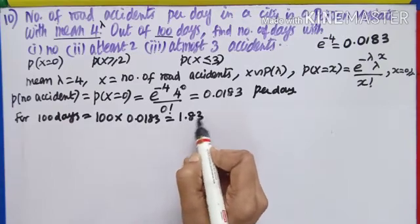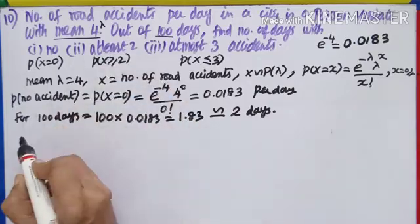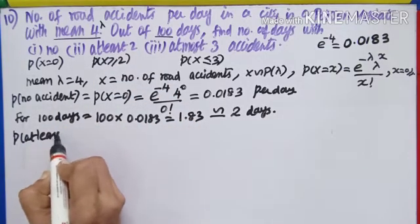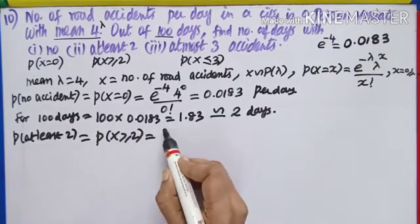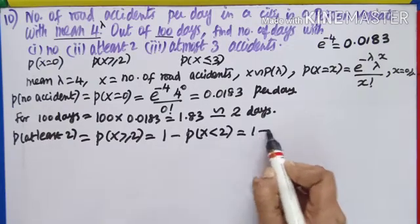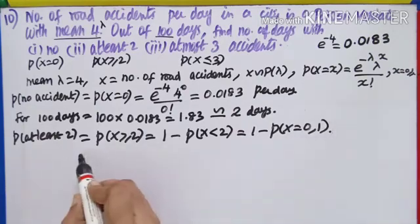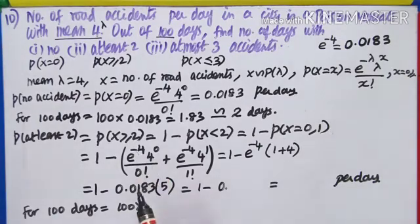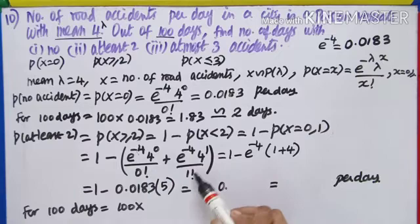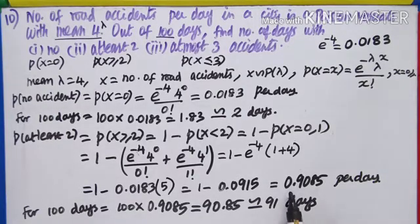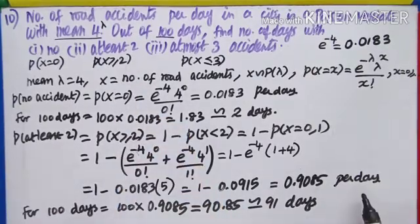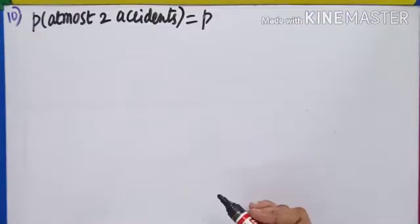Simplifying: 0.0183 × 100 = 1.83, approximately 2 days. Second question — at least two accidents, x ≥ 2. Using the complement: 1 − P(X = 0) − P(X = 1) = 1 − [e^(−4)·4^0/0! + e^(−4)·4^1/1!]. e^(−4) is common: 1 + 4 = 5. So 1 − 0.0183 × 5 = 1 − 0.0915 = 0.9085. For 100 days: 0.9085 × 100 ≈ 91 days.